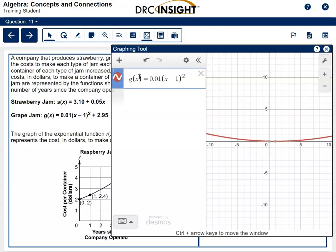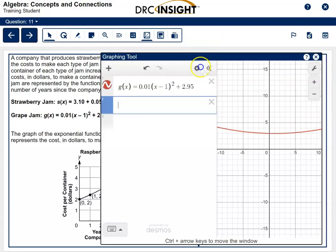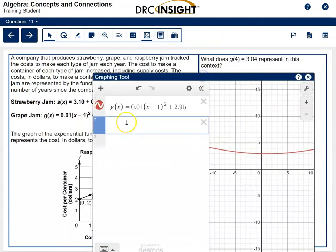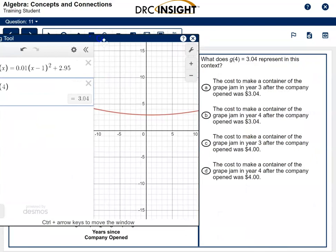I did type shift 6 and put that exponent. So if you're not sure how to do that, shift 6 gives you an exponent, then you'll type the 2 in front. So this is G of X, and we're asked to explain what G of 4 represents. You'll see G of 4 is 3.04 in the calculator as well, so they're right about that. So it says, what does this mean?